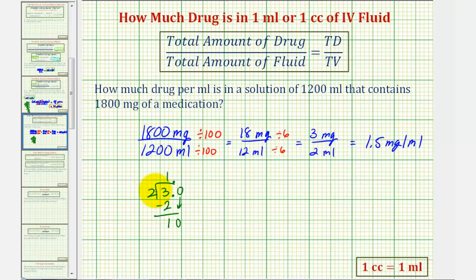Bring down the zero, and now there are two fives in ten. Two times five is ten. We subtract, this difference is zero. So we have a terminating decimal, verifying that three halves is equal to 1.5. So this solution contains 1.5 milligrams of medication per milliliter.